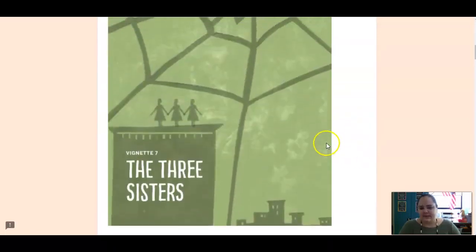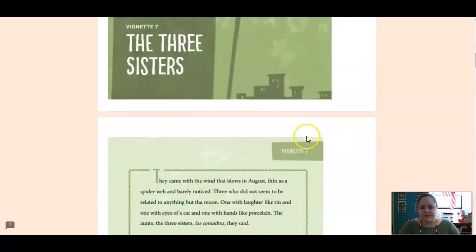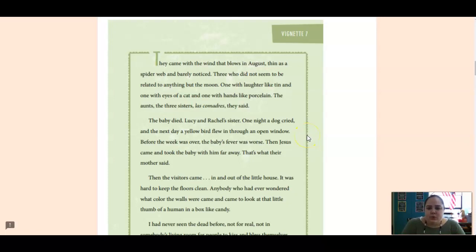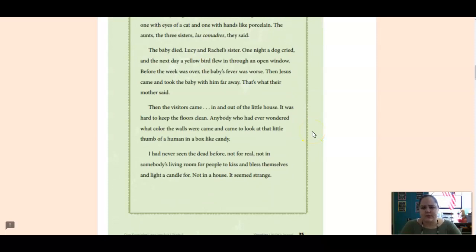All right so we're reading vignette seven today which is called the three sisters. They came with the wind that blows in August thin as a spiderweb and barely noticed. Three who did not seem to be related to anything but the moon. One with laughter like tin and one with eyes of a cat and one with hands like porcelain. The aunts, the three sisters, las comadres, they said. The baby died. Lucian's, Rachel's sister. One night a dog cried and the next day a yellow bird flew in through an open window. Before the week was over the baby's fever was worse. Then Jesus came and took the baby with him far away. That's what their mother said.